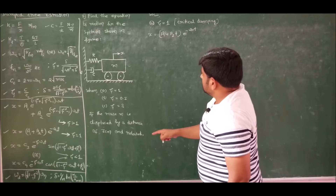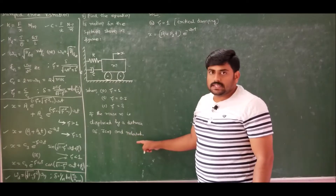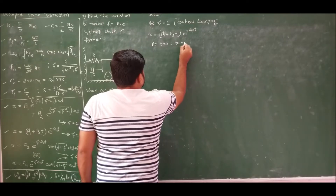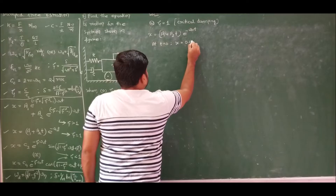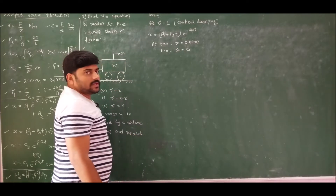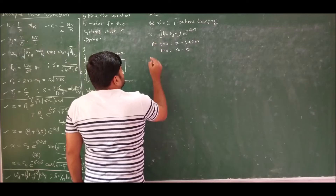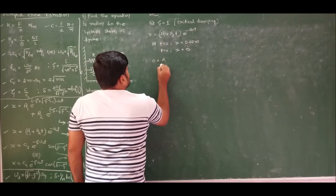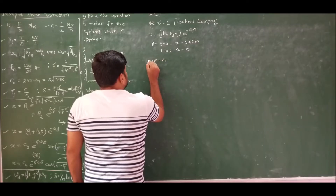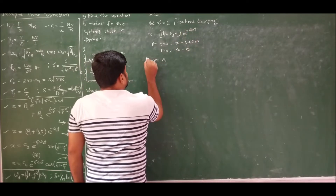The mass is displaced by a distance of 3 cm and then released, which means at time t = 0, x = 0.03 meters, and since it is released from rest, the velocity at that moment is zero. Using these two initial conditions, we determine the values of a1 and a2. Applying the first condition, x = 0.03 at t = 0: substituting t = 0, the term a2·t vanishes and e^0 = 1, so we get a1 = 0.03.